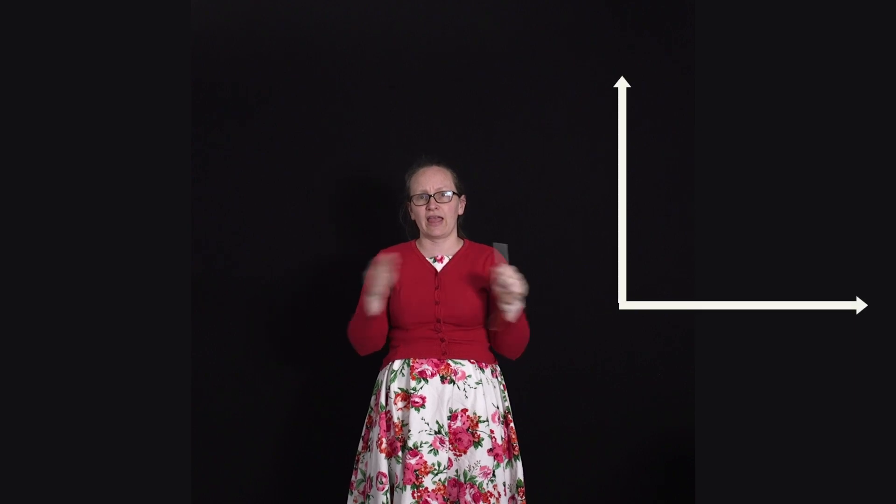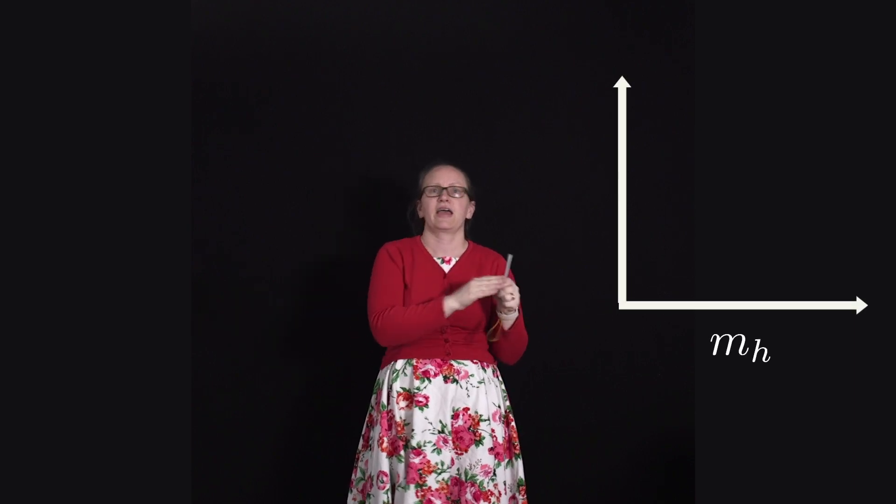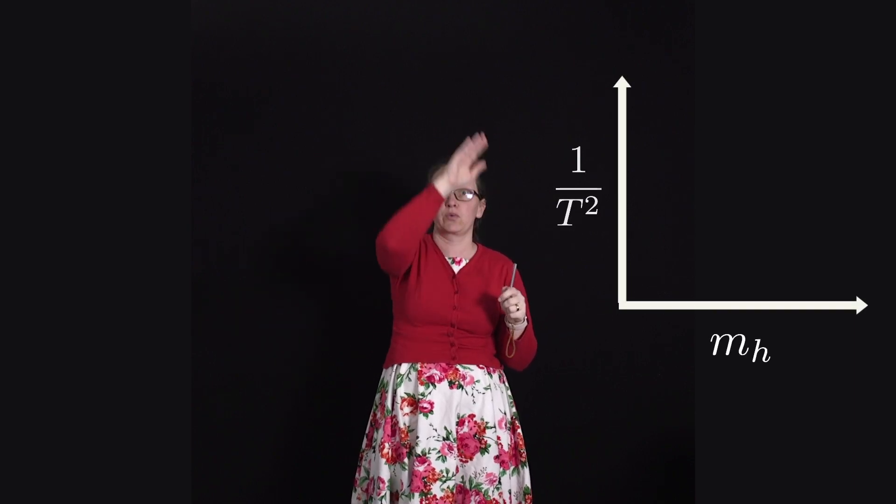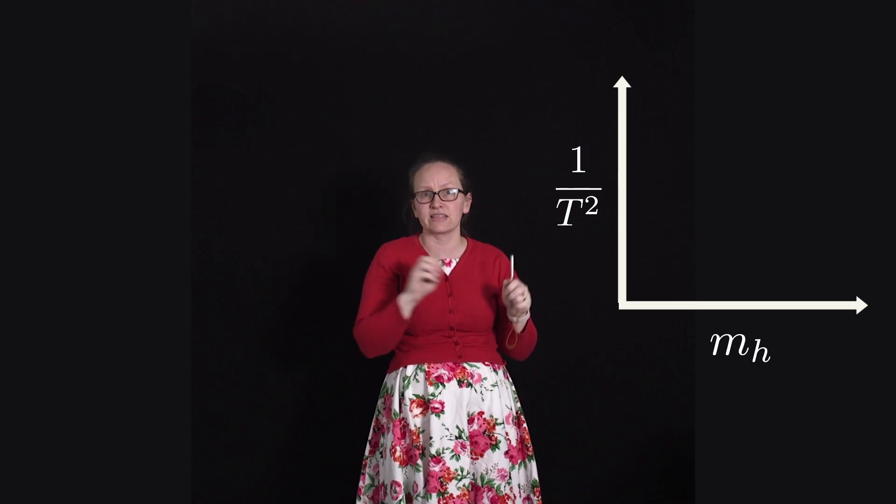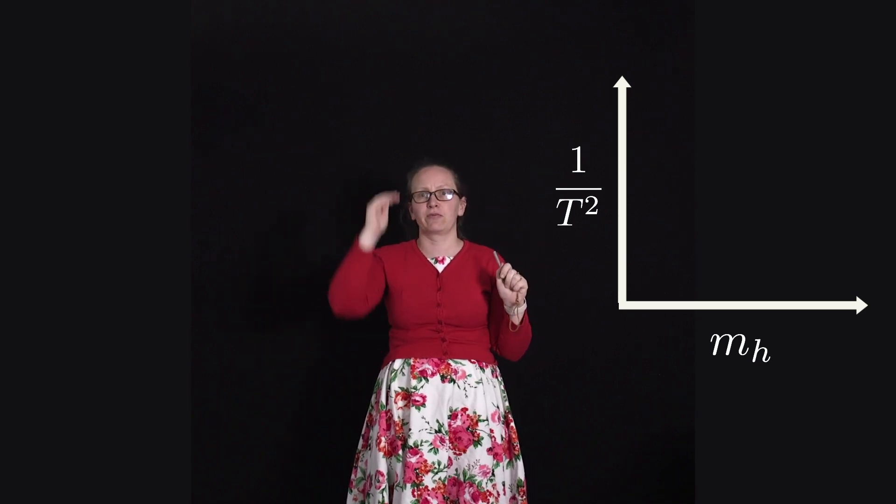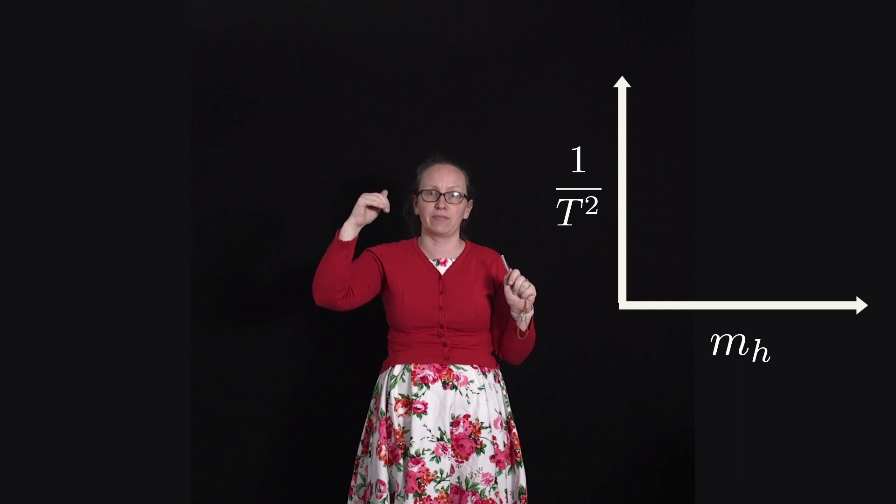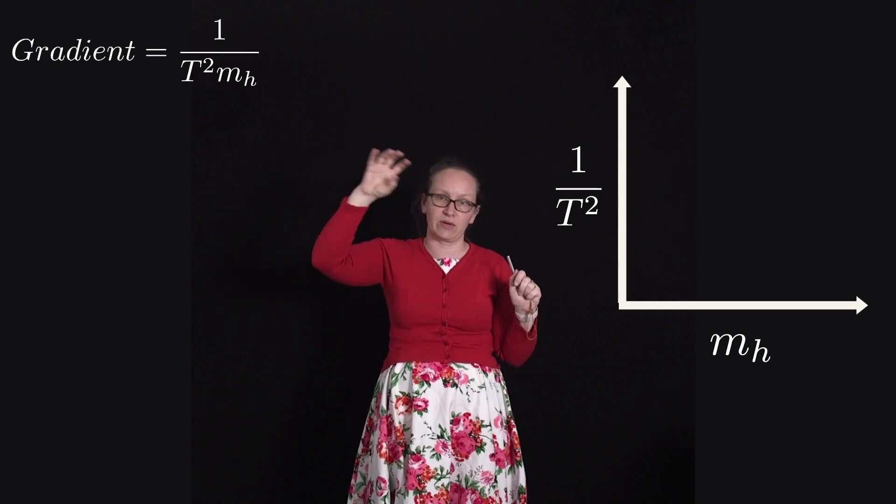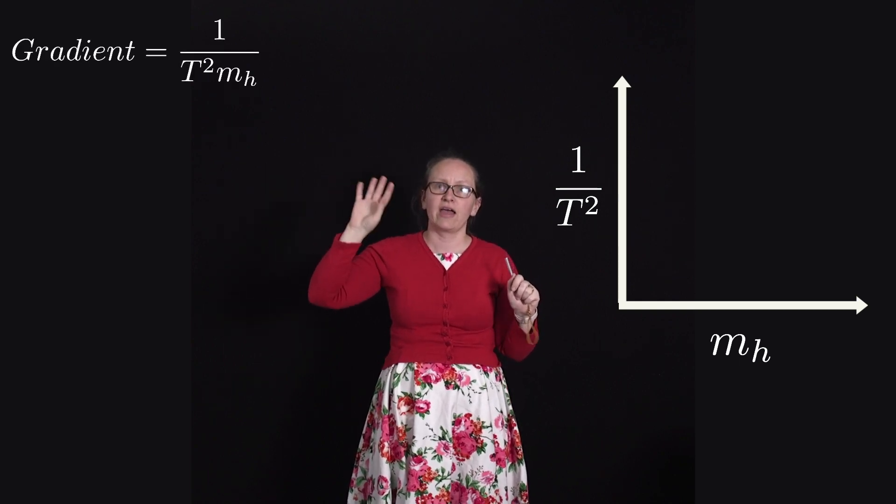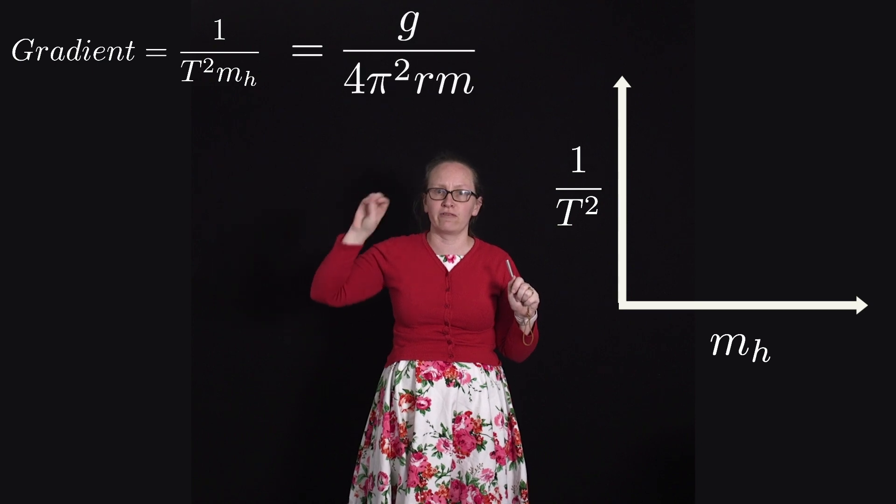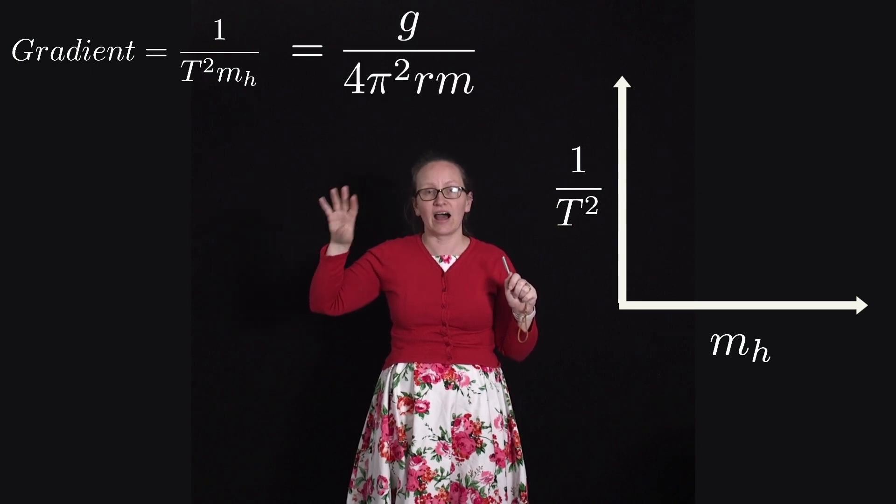So if your students then do a graph where they put say mh along the x-axis and 1 on the period squared on the y-axis, the gradient of this graph will be 1 on T² divided by mh, which is 1 over T² times mh, and this is equal to g over 4π² rm.